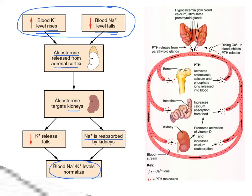Another hormone we talked about is parathyroid hormone. We have a little picture here of a thyroid with parathyroid glands attached to the backside. Parathyroid hormone is released when there is low blood calcium — hypocalcemia. It acts on bones for the osteoclasts to break down bone and release calcium and phosphorus into the bloodstream. It acts on the intestine to increase calcium absorption from food. It also acts on the kidney to promote the activation of vitamin D, which is needed to absorb calcium from food, and it increases calcium reabsorption in the convoluted tubules. The end result is that calcium levels in the bloodstream rise, and then negative feedback shuts off parathyroid hormone.